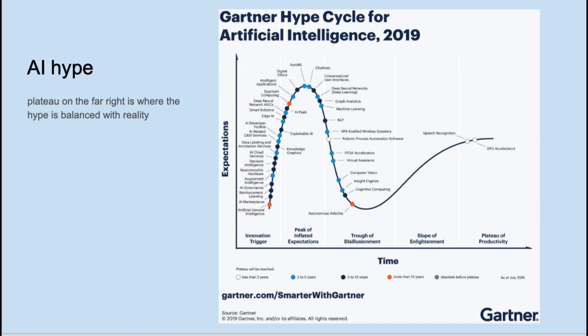Gartner outputs hype cycles for various fields. Here's the 2019 hype cycle for AI. Each dot represents a subfield and is color-coded according to when it reaches viability. Notice that autonomous vehicles are orange, indicating 10 years before they're fully functional. The hype of a field rises sharply to a peak, and then disappointment sets in. The plateau at the far right is when the field reaches maturity and reaches its unhyped potential. Notice where machine learning is on the cycle.